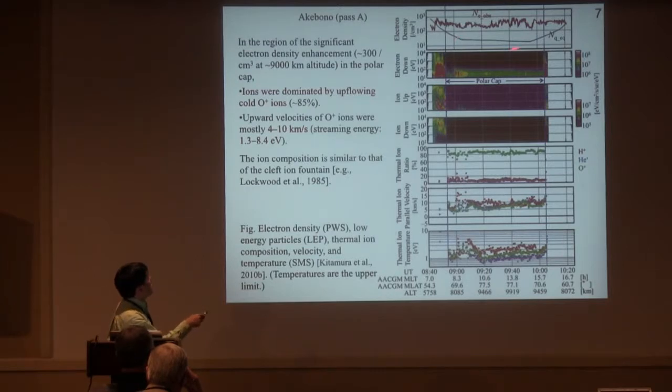In the region of significant electron density enhancement in the polar cap, ions were dominated by cold, about 1 eV, and upflowing velocity of 4 to 10 km per second, oxygen ions. The velocity corresponds to only 1 to 8 electron volts. This ion composition is similar to that of the cleft ion fountain, but this velocity is not so large.